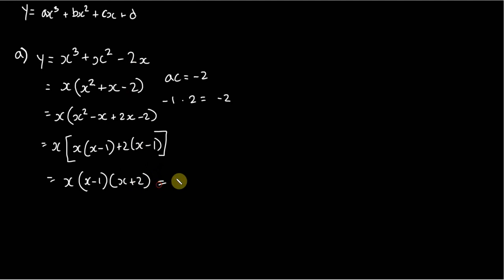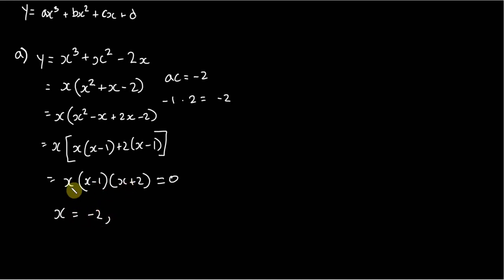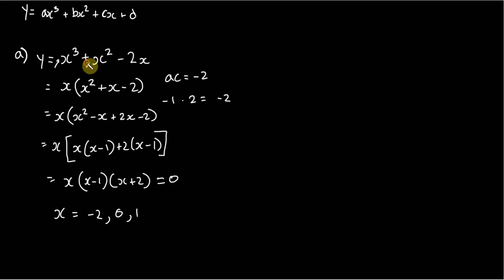So we end up with x times x minus 1 times x plus 2, all set equal to 0. So we're solving for x and we have solutions at negative 2, at 0, and at 1. And as I said for that tip, you can tell immediately that we're going to have a solution at 1, because if the coefficients add to 0, then we know we're going to have a solution at 1 — applicable to any order of polynomial.